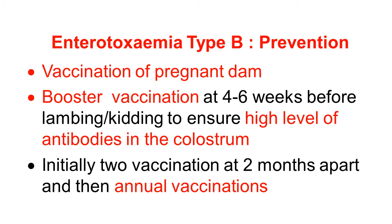Friends, here we talk about Prevention of Enterotoxemia Type B. Vaccination is a key step. Vaccination of the pregnant dam and booster vaccination 4 to 6 weeks before lambing or kidding causes high levels of antibodies in the colostrum. When newborns ingest this colostrum, they receive passive immunity that protects them from Enterotoxemia Type B. Initially, two vaccinations are given 2 months apart, then annual vaccination as per the manufacturer's advice.